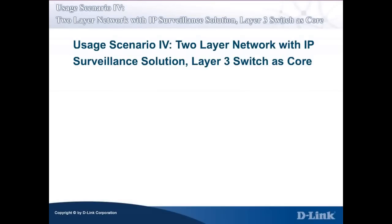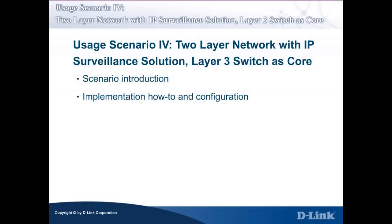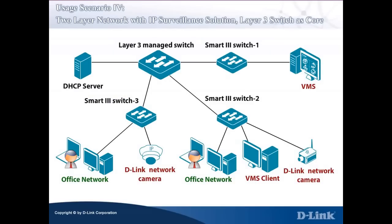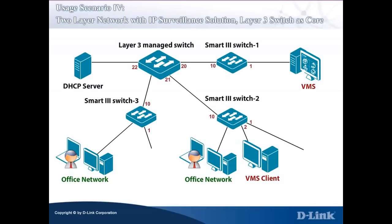Usage Scenario 4: Two-Layer Network with IP Surveillance Solution, with a Layer 3 Switch as core. In the following slides, we will introduce the last scenario and talk about how to implement and configure Usage Scenario 4 Auto Surveillance Network. This is a two-layer switched network with a D-Link Layer 3 Switch as the core layer switch and Smart 3 Switches as the access layer switches, as shown in the diagram, which shows the connections, configurations, and connected ports of the switches, network cameras, and other components.